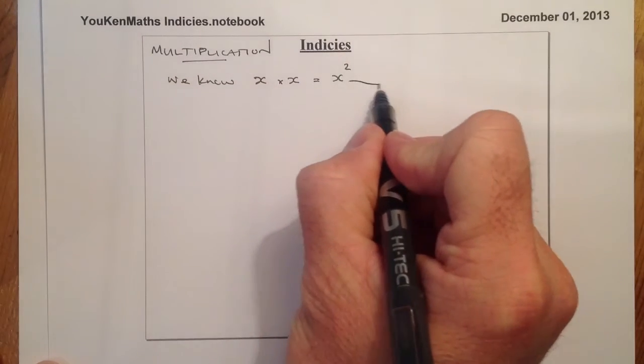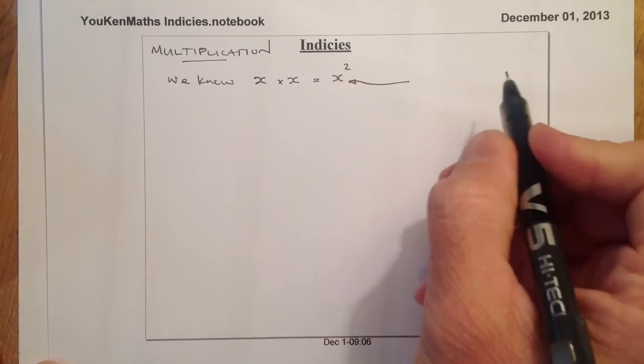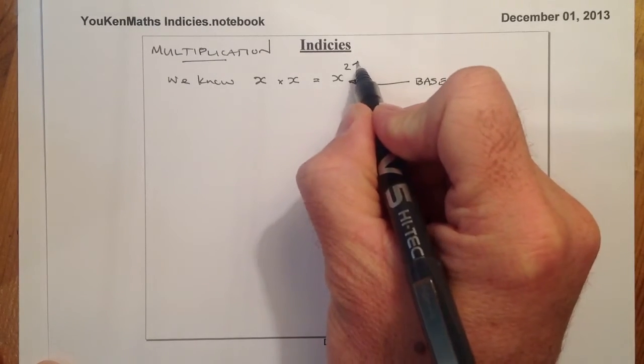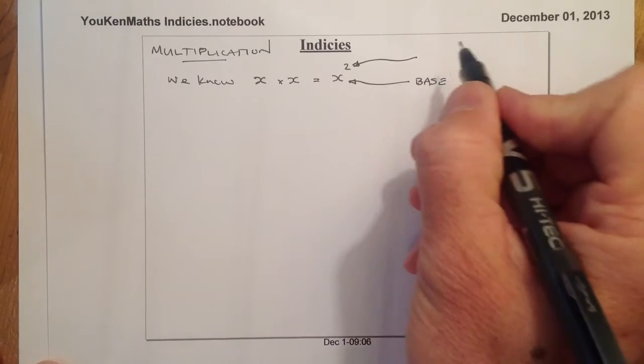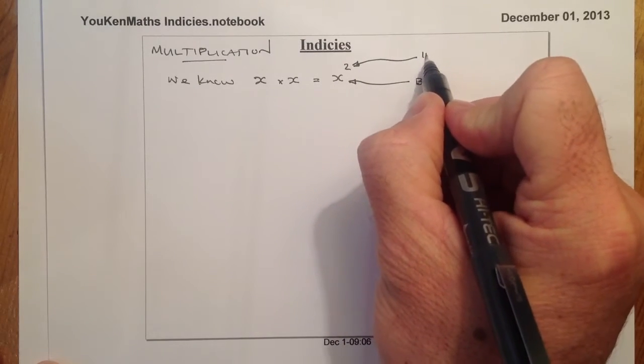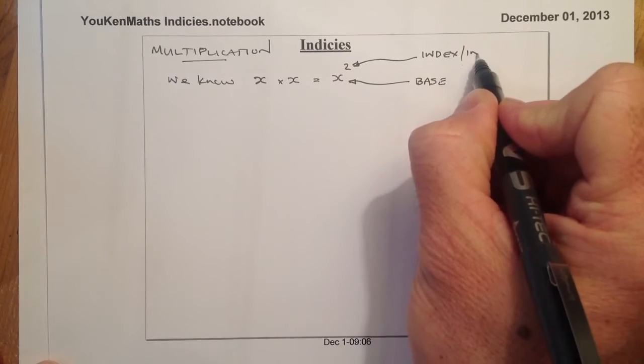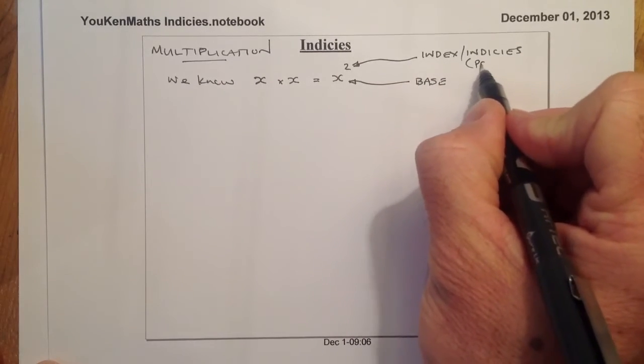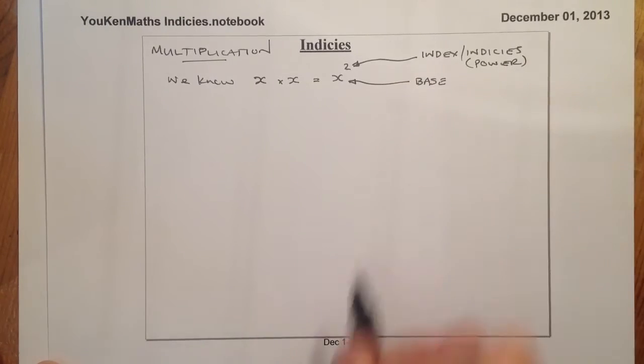So what I have here when I'm talking about indices, I have the x there is called the base. And this power up at the top here is called the index, or indices if there's more than one of them. And sometimes we refer to them as the power.